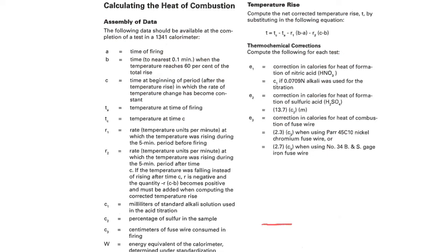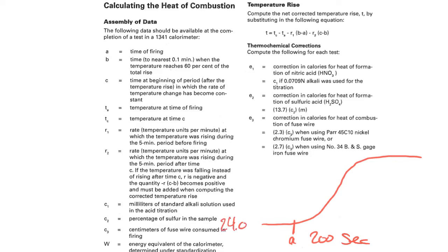Let's set up a crude trial. Let's say we detonate at point A at 200 seconds, and that was at 24.0 degrees C. Then we're leveling off around point C at 1,200 seconds at 27.0 degrees C. So A is the time of firing — 200 seconds. C is the time at the beginning of the period after the temperature rise where the rate of temperature change becomes constant. Point C would be 1,200 seconds.